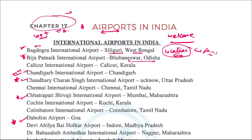Starting with Bagdogra Airport in Siliguri, West Bengal. Then there is Biju Patnaik International Airport in Bhubaneswar, Odisha. Next is Chaudhary Charan Singh International Airport in Lucknow, Uttar Pradesh. Then Mumbai Airport is named after Chhatrapati Shivaji, so it is Chhatrapati Shivaji International Airport.